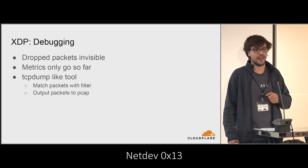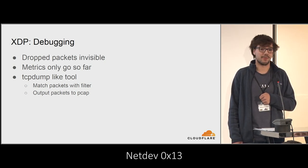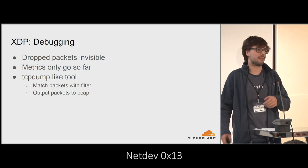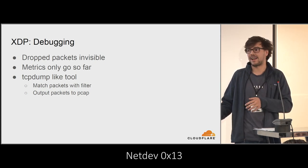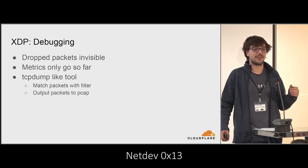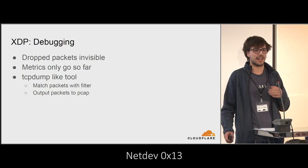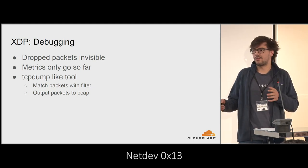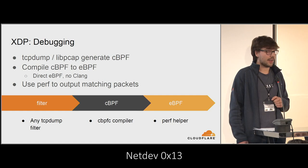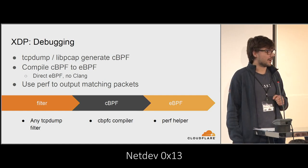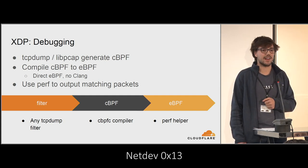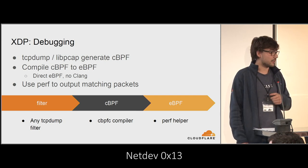Now onto debugging. We're dropping packets everywhere — how do we figure out what we're dropping when we have a problem? Metrics only go so far. We have drop counts per rule, but if we're searching for a needle in a haystack with one packet disappearing, it can be really hard to figure out what happened. We want a tcpdump-like tool: a filter to match the specific packet we're looking for, and see what happened to it. It turns out we already have all the pieces: libpcap generates classic BPF, and we've just talked about converting CBPF to eBPF. We can also use perf to output matching packets.